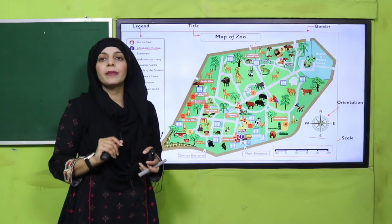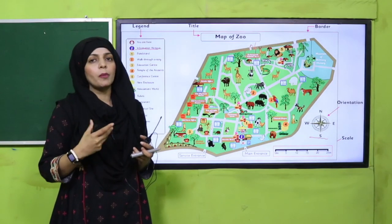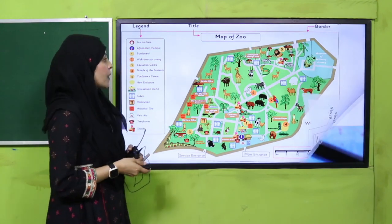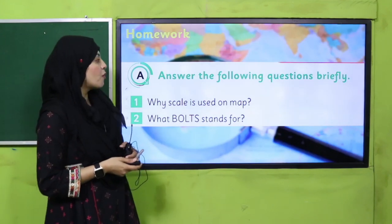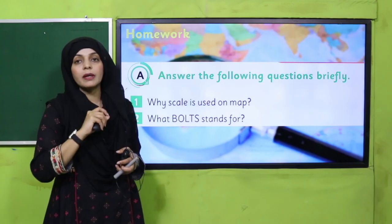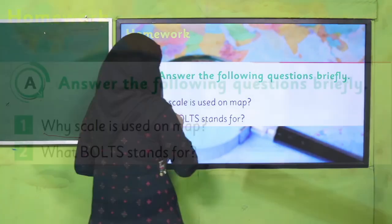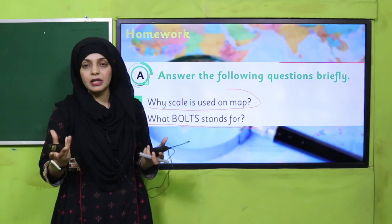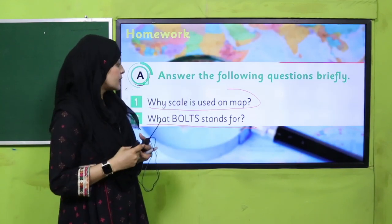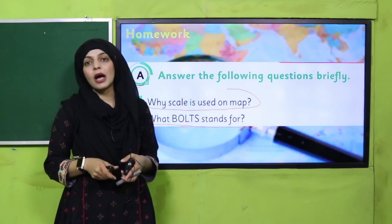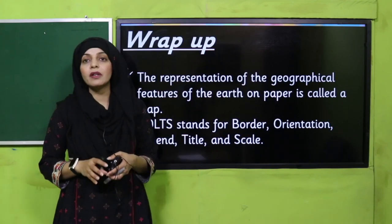This is how you will find directions. Complete this as home activity in your book with a pencil, then discuss it with your classmates the next day. For the next homework, answer the two questions given in your book and write them in your notebook: why is scale used on a map, and what does BOLTS stand for? Scale is used on a map to show distances, and BOLTS stands for border, orientation, legend, title, and scale.